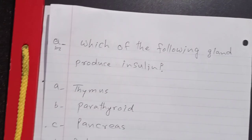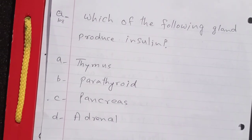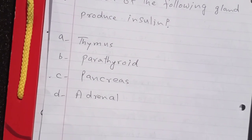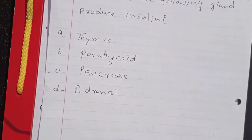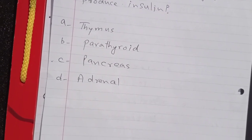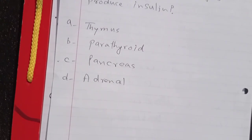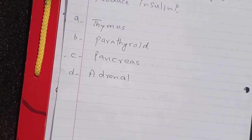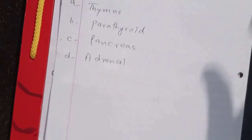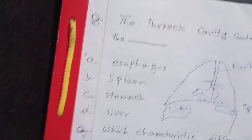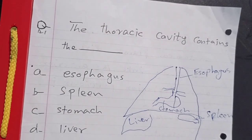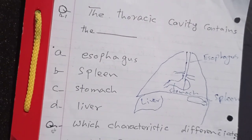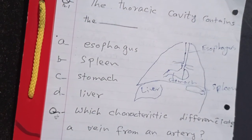Which of the following glands produces insulin? Thymus, Parathyroid, Pancreas, or Adrenal. The answer is C: Pancreas.